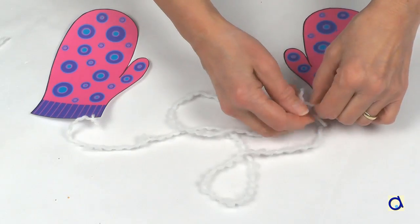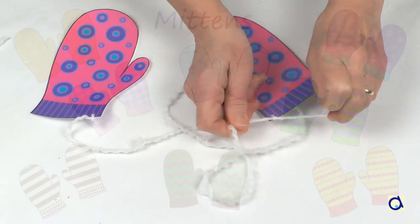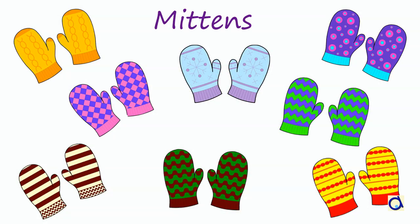You can then decorate a bulletin board with all the mittens of your students. In the document, you will find a blank pattern that allows the children to decorate their pair of mittens using their creativity.